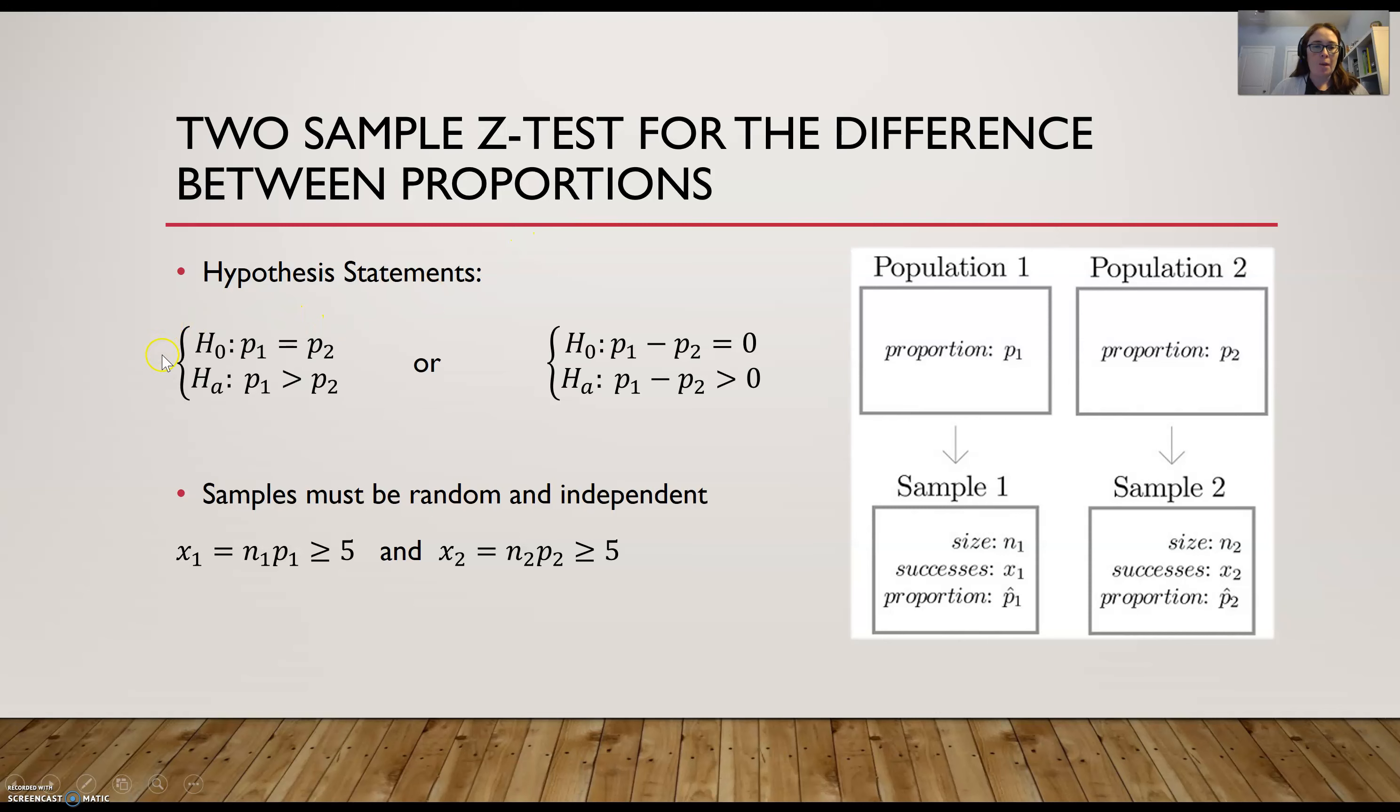Our hypothesis tests often will look like this one on the left here, where I have population one proportion is equal to the population proportion for the second sample, and then an alternative statement. You can write these as a difference as well, but you don't see that too often, but it is an equivalent statement to the one on the left. Now when I have two population proportions I'm dealing with, I've got populations, and then I have all the information about the samples. So you're going to be given a sample size, and then usually either the successes for each sample, or the proportion for each sample.